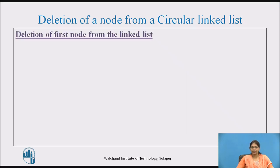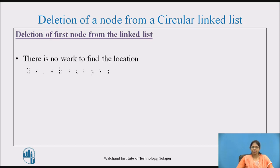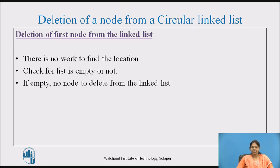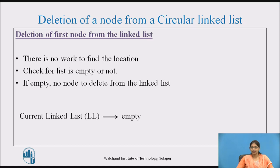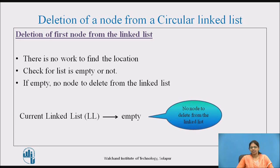For deletion of the first node from the linked list, there is no need to find the location. We only need to check if the list is empty or not. If the list is empty, then we display the message that there is no need to delete from the linked list. Here, ll represents the pointer to the linked list. Initially it is empty. When the ll pointer is pointing to empty, we print the message that there is no need to delete from the linked list.